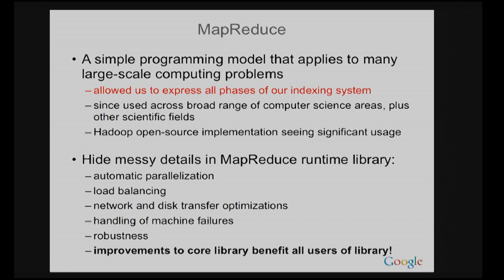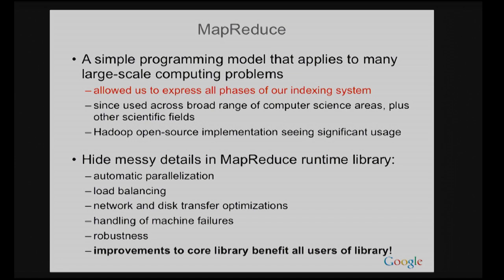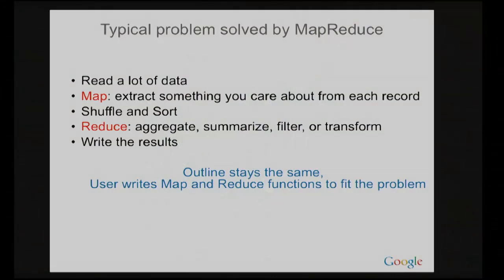So we squinted at all these phases and came up with this abstraction — MapReduce — that allowed us to express all the different computations we wanted in the indexing system. The programming model is actually pretty simple: you write a couple of simple functions. Then you can hide in the implementation a bunch of really nice features that everyone using this abstraction can benefit from. In particular, the underlying system deals with scheduling operations so they're on the same machines or nearby the actual disks where data resides, handles machine failures automatically, handles re-execution for fault tolerance, and does a bunch of networking and disk transfer optimizations. Improvements to this core library then benefit everyone who's written code in this style. You write a map and a reduce function, and the rest of the framework takes care of all the other details.